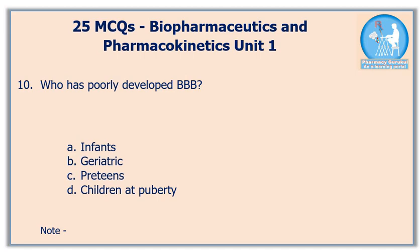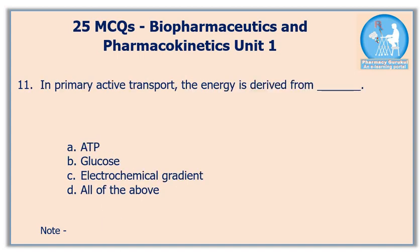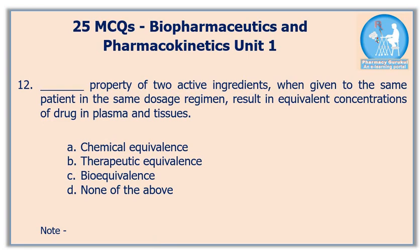Tenth question: who has a poorly developed blood-brain barrier? The correct answer is option A, infants. Eleventh question: in primary active transport, the energy is derived from — the correct answer is option A, ATP.